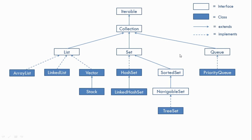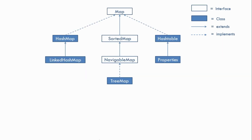In this diagram we can only see the hierarchy of List and Set — Map is missing. That is because Map is not a child of the Collection interface. It is part of the Collections Framework, but it does not extend the Collection interface, so it has a separate hierarchy.